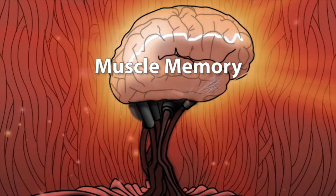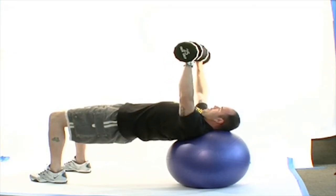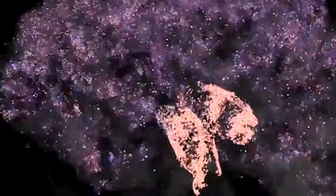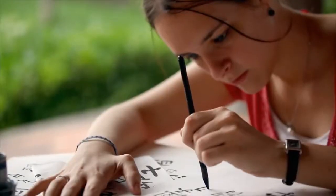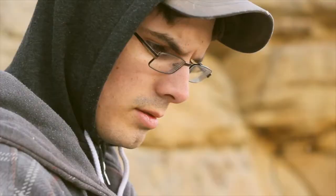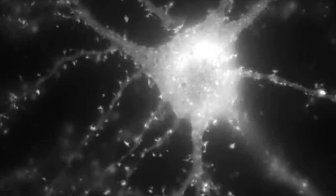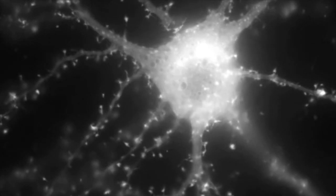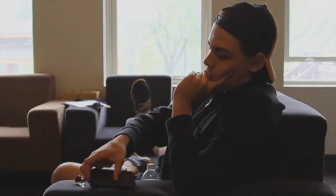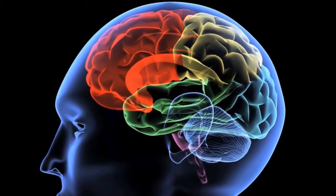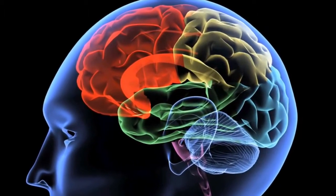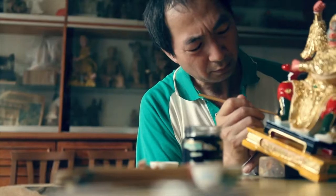Muscle memory is not something that happens in the muscles — it is something that happens in our brain. The first time you learn something new, the activity has not yet been programmed in the brain, meaning your neural pathways do not know it yet, so they cannot enable the activity. However, your brain coordinates the different perceptual, cognitive, and physical signals that are needed to do the activity.